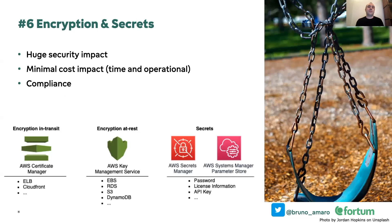The next pitfall is encryption and secrets — one of my favorites. When you are doing encryption and secret handling, there's a huge positive security impact: it really strengthens the security of your solution. I like it so much because the cost impact is minimal, both in time spent and in your AWS bill — most of these things are available for free. They're super simple to enable as long as you know what to enable, and there's also a positive correlation with compliance: if you need to follow certain compliance programs, one of the things mandated is encryption in transit and at rest. For encryption in transit, you can use AWS Certificate Manager, which issues SSL/TLS certificates to use in ELBs, CloudFront, and so on.